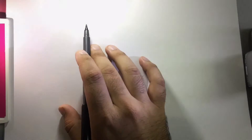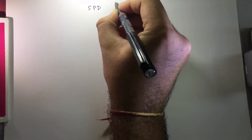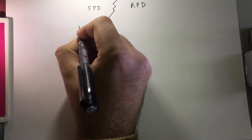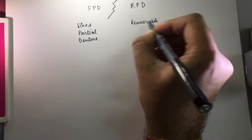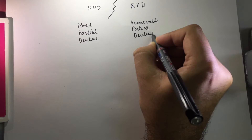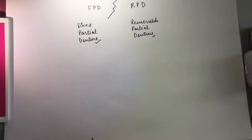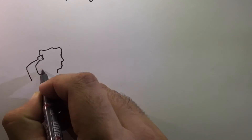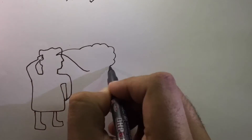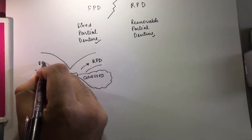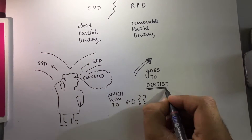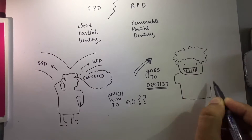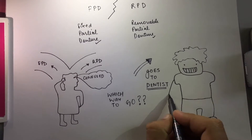The title for today's video is FPD vs RPD, that is Fixed Partial Denture and Removable Partial Denture. Sometimes a condition arises where a patient falls in a dilemma, not being able to decide between a fixed and removable denture. The patient comes to us and we are the ones who have to guide them.